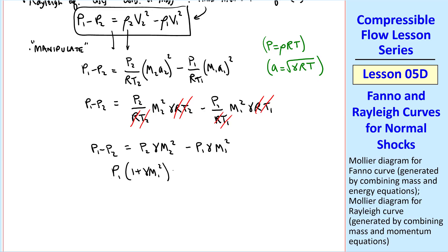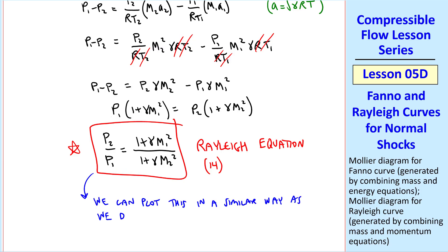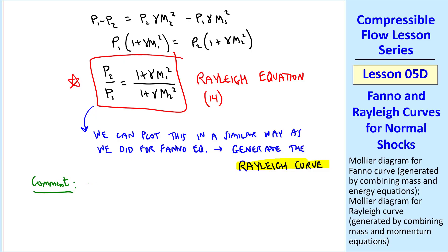So, P1 minus P2 equal P2 gamma M2 squared minus P1 gamma M1 squared. Combining some terms and rearranging, we get this, or finally, in terms of our desired pressure ratio across the shock, we get 1 plus gamma M1 squared over 1 plus gamma M2 squared. This is the Rayleigh equation, which I'll number equation 14. This is an alternate form of the pressure ratio across a shock. We can plot this in a similar way for the Fanno equation, and thus generate the Rayleigh curve. In fact, in Excel, I just copied and pasted everything that I had from Fanno, but used this equation for pressure ratio instead of the Fanno equation. And I comment here, as I've already said, we did not use the energy equation to generate the Rayleigh equation. We used only mass and momentum.